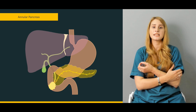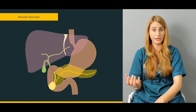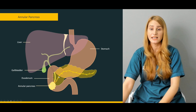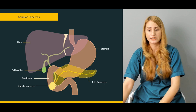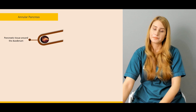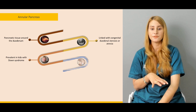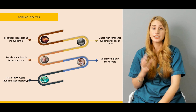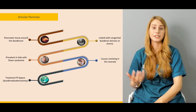Due to sphincter obstruction, the patient presents with bilious vomiting; it is also related to duodenal atresia. Accessory pancreatic tissue surrounds the second part of the duodenum, compressing it — this is related to congenital duodenal stenosis or atresia and is more common in Down syndrome neonates who present with continuous bilious vomiting. Treatment is duodenoduodenostomy or resection of the pancreatic head.